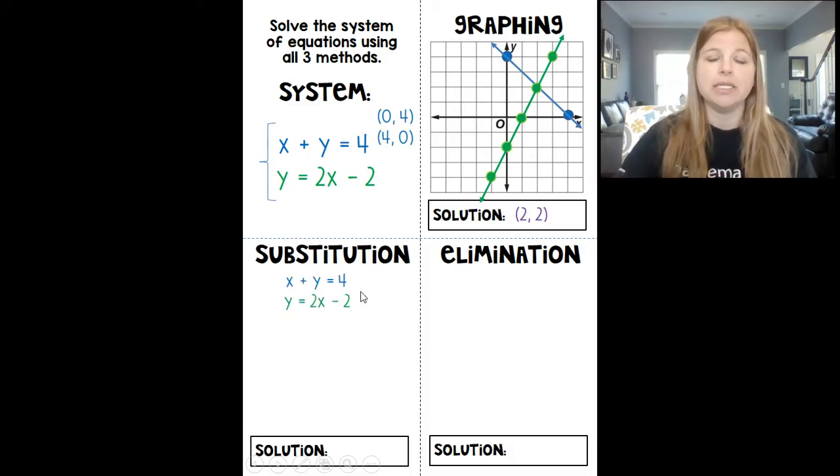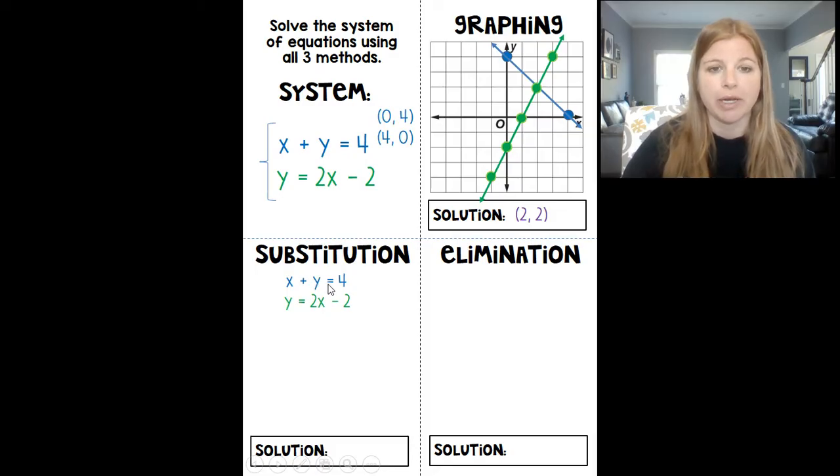Now, substitution. Substitution is a method where we want one of the equations to be set equal to a variable. This first equation, x plus y equals 4, is not set equal to a variable. I don't have x or y by itself. But look at the second equation. This is actually already set up for y to be by itself. y is equal to 2x minus 2. So that means wherever I see y in my other equation, I'm going to substitute in everything that y is equal to in for that y.